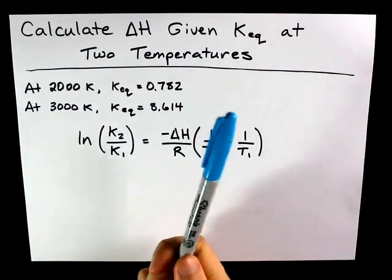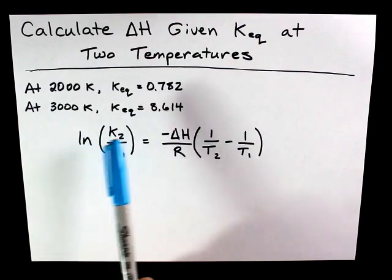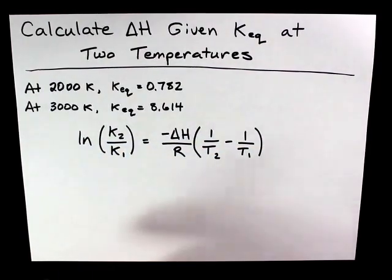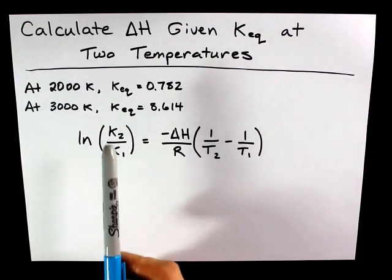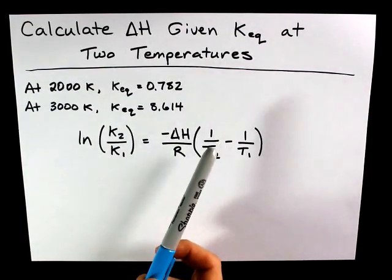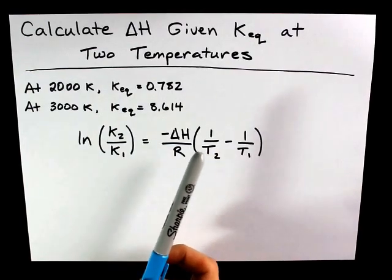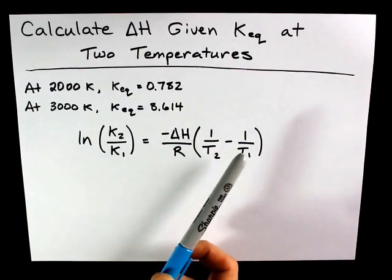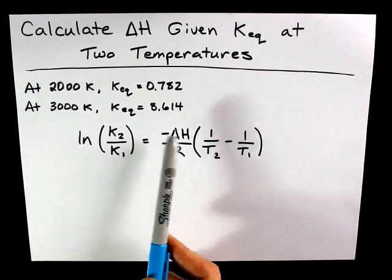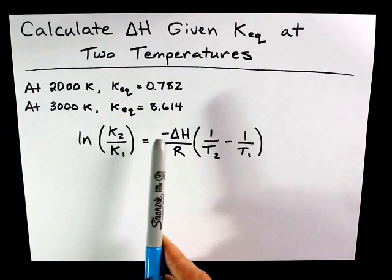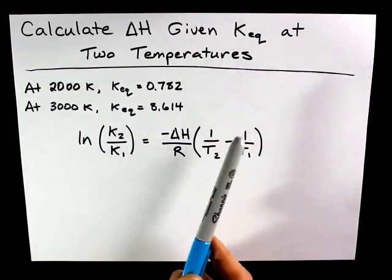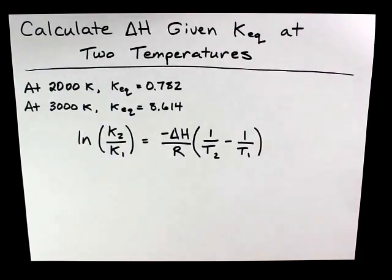The Keqs and the temperatures and the delta H are related via this equation related to the van't Hoff equation. You'll note that this is a ratio k2 over k1, and this is a difference between reciprocals. That's 1 over t2 and 1 over t1. Your teacher may have these numbers flipped if the negative is gone, or may have the order of these flipped if the negative is gone. If your teacher's equation looks different from this, it's probably just because they've rearranged it.